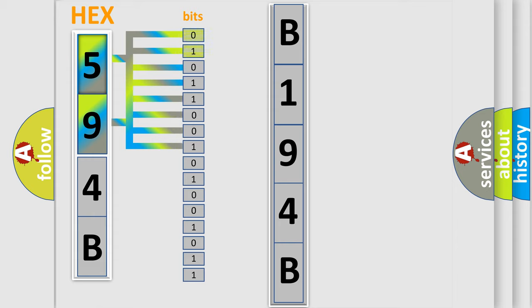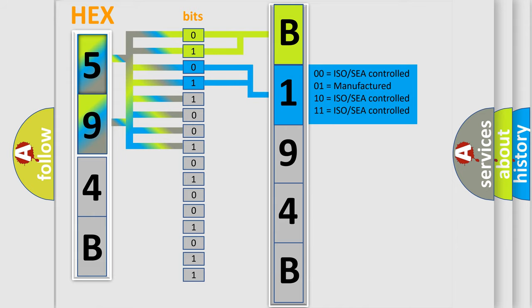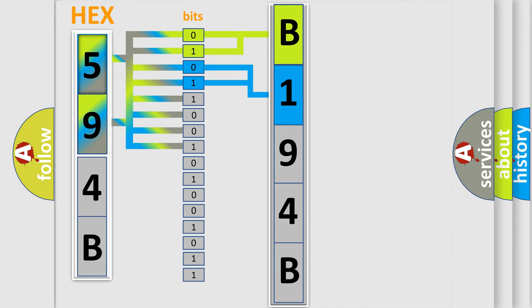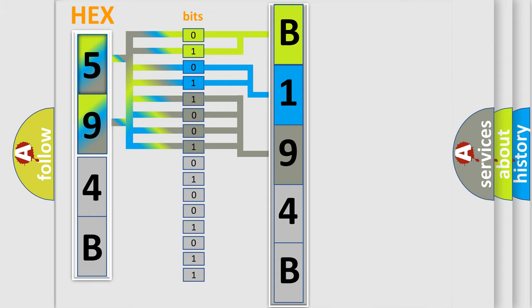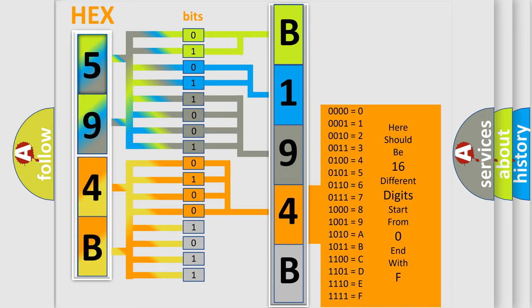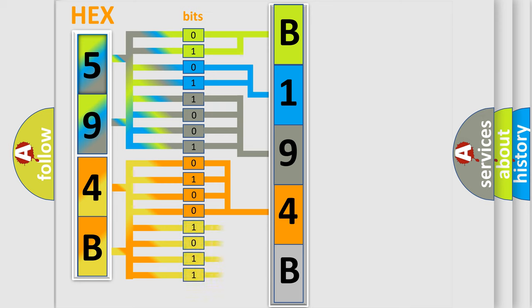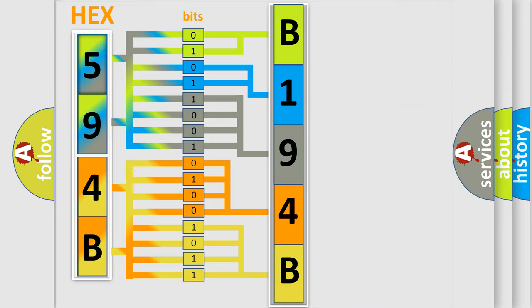A bit is either zero (low level) or one (high level). By combining the first two bits, the basic character of the error code is expressed. The next two bits determine the second character. The last four bits of the first byte define the third character of the code. The second byte is composed of a combination of eight bits. The first four bits determine the fourth character, and the combination of the last four bits defines the fifth character. A single byte conceals 256 possible combinations.